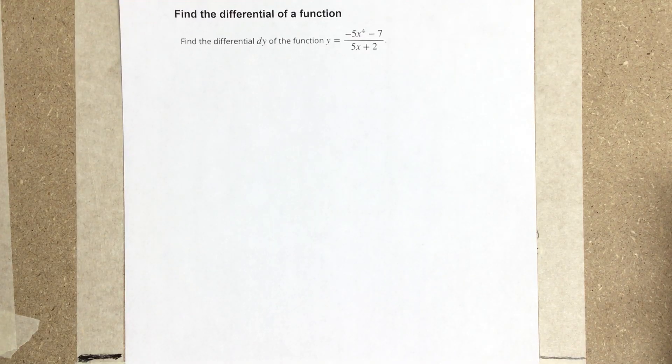In this video we're going to find the differential of a function. Find the differential dy of the function y equals negative 5x to the fourth minus 7 divided by 5x plus 2.